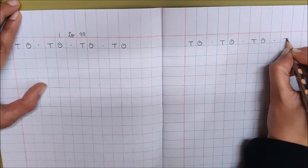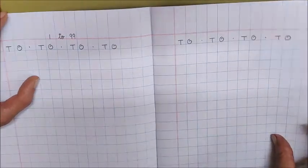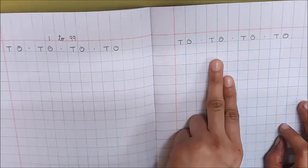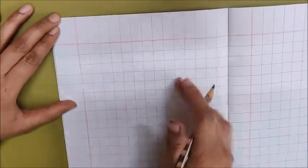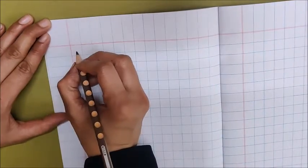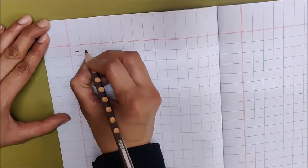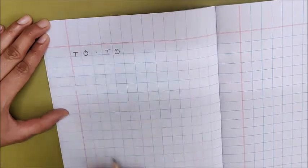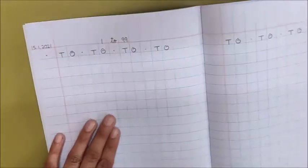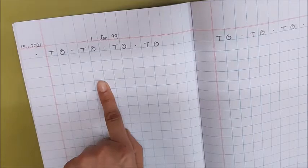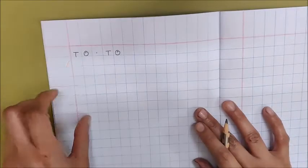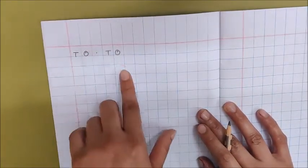Now children we have written 4 T0's on this page, 4 T0's on the second page. Now turn the page and here we will write 2 T0's. So in the first box write down T, O, dot, T, O.